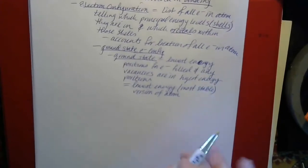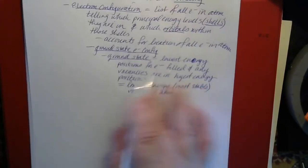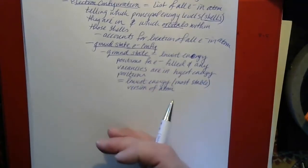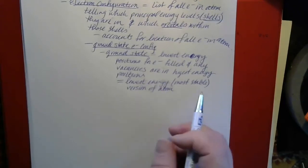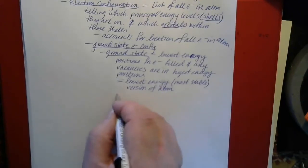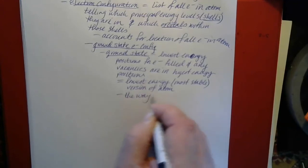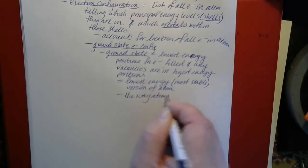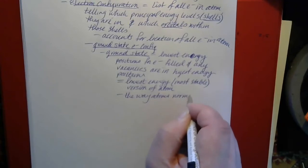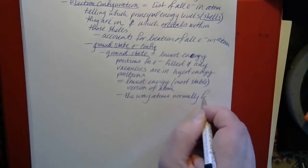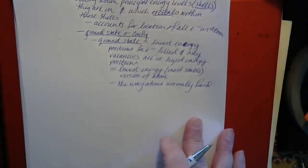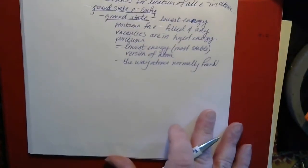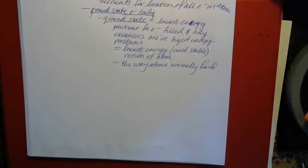Because this is the lowest energy possible electron arrangement for an element, it means it's the lowest energy form of the atom and it's also the most stable. This is the way that atoms are normally found — it's basically your normal electron configuration.